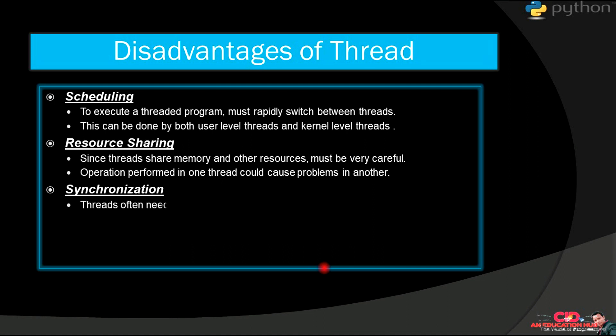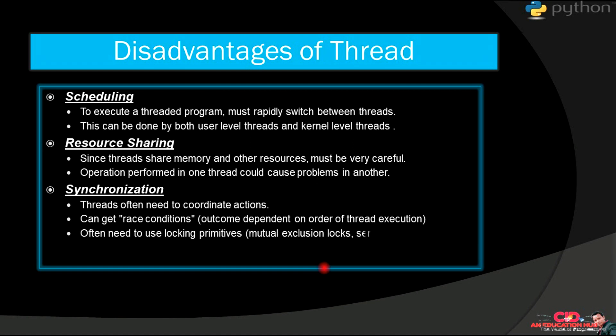Next is synchronization. Threads often need to coordinate actions. Your all the threads will have to coordinate to each other for running program smoothly. It can get race condition because they are sharing or accessing same type of data and same data at concurrent time. This can get race condition and your outcome will be dependent on order of thread execution. Often need to use locking primitives. You will have to use some locking system or semaphores, etc. We will understand this how to use locks and semaphores in our next video and that will be the last video.